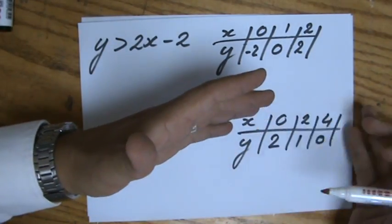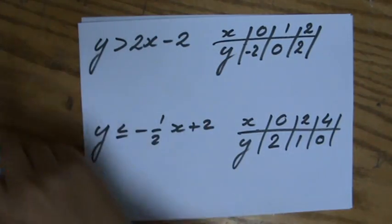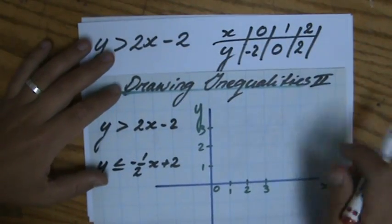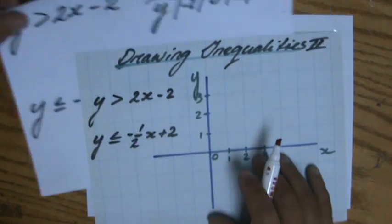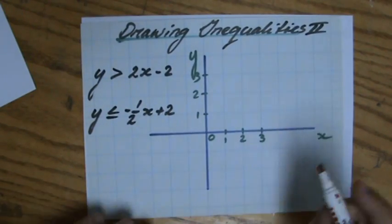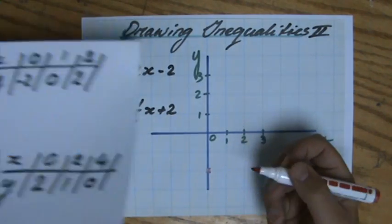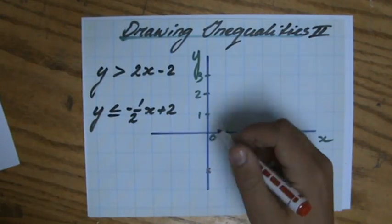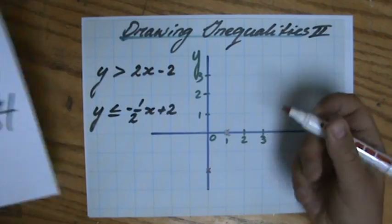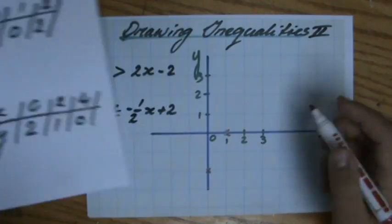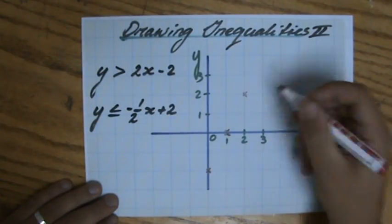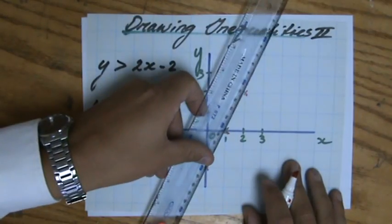For the first one I'm going to plot the points: 0, -2, that's the y-intercept; then 1, 0; and 2, 2. As you can see so far it is as if you are drawing a linear equation. Are they on one line? Yes they are, I didn't make a mistake.